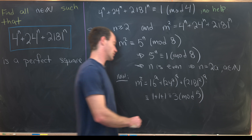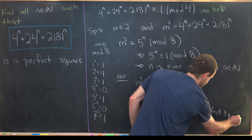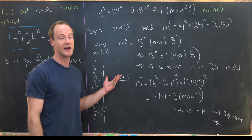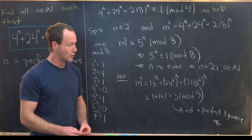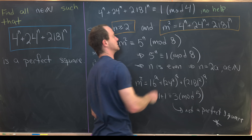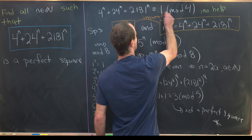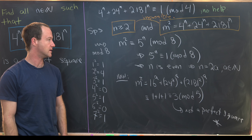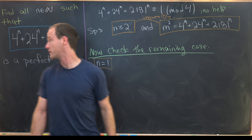But as we saw earlier, 3 is not a perfect square mod 5 — the only perfect squares mod 5 are 0, 1, and 4. So we have a contradiction: m² ≡ 3 mod 5 is impossible. This contradicts the simultaneous assumption that n ≥ 2 and a solution exists, so n ≥ 2 yields no solutions. Therefore n must be strictly less than 2, meaning n = 1.